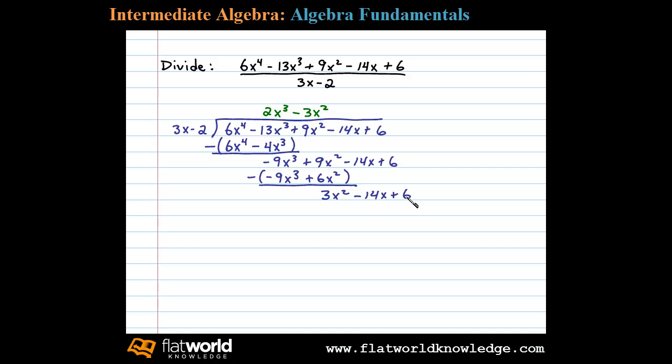3x squared, bring down the terms and ask what times 3x will give us 3x squared. Well in this case plus x will do it. X times 3x is 3x squared. X times negative 2 is negative 2x, after which we then subtract. Negative 14x minus negative 2x is really the same as negative 14x plus 2x, leaves us with negative 12x plus 6.